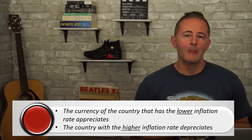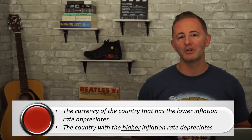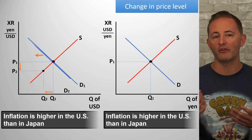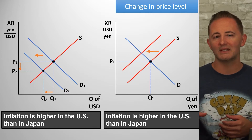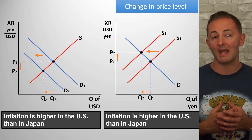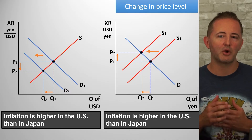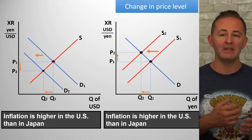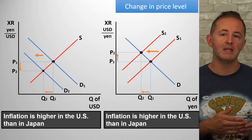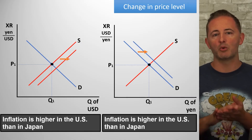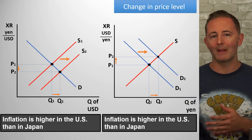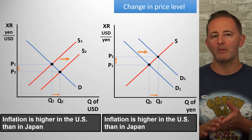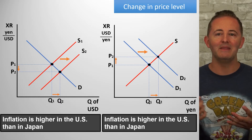Third is relative changes in the price level. The currency of the country with a lower inflation rate will appreciate, while the country with higher inflation sees its currency depreciate. If the US has a higher inflation rate than Japan, Japanese people won't want to buy as many American goods, decreasing demand for the dollar and decreasing supply of the yen — causing the dollar to depreciate and the yen to appreciate. Alternatively, Americans will want to buy more Japanese goods since they've become relatively cheaper, increasing demand for the yen and increasing supply of the dollar. Either approach reaches the same conclusion.